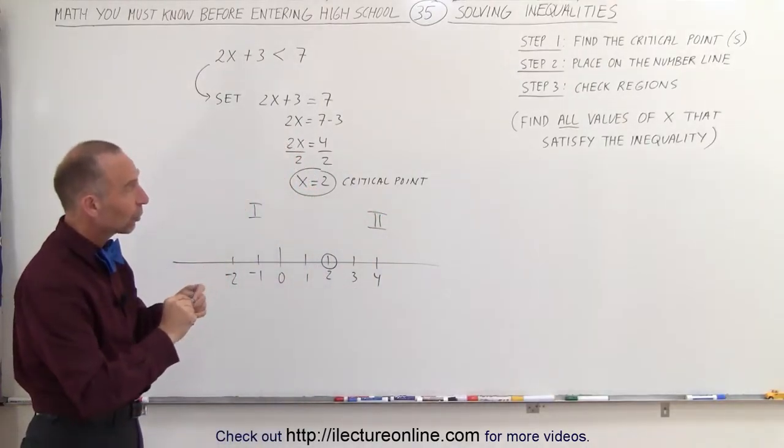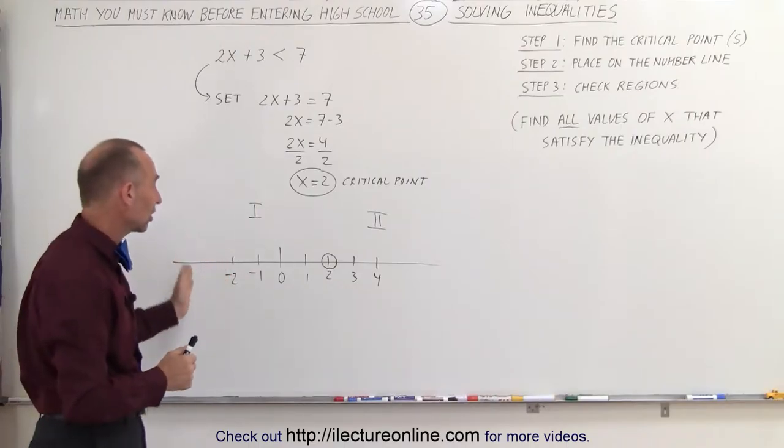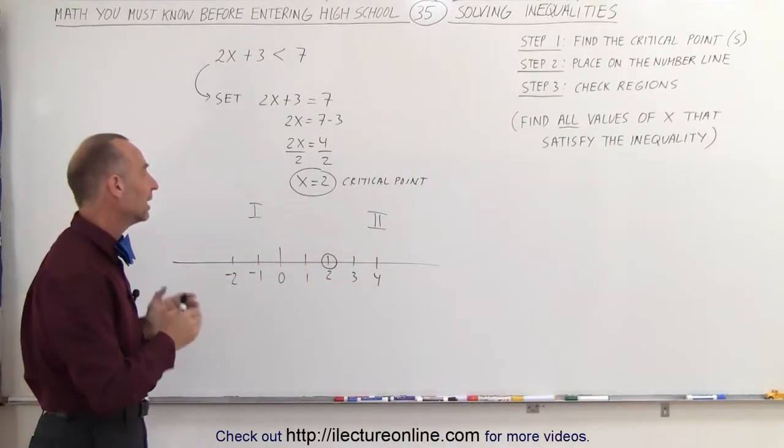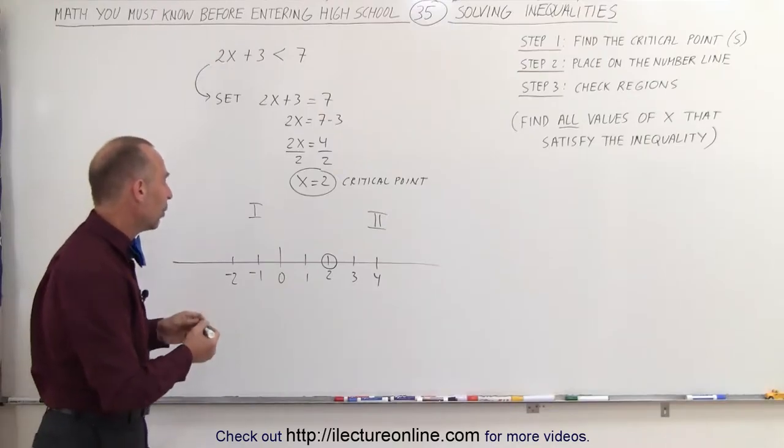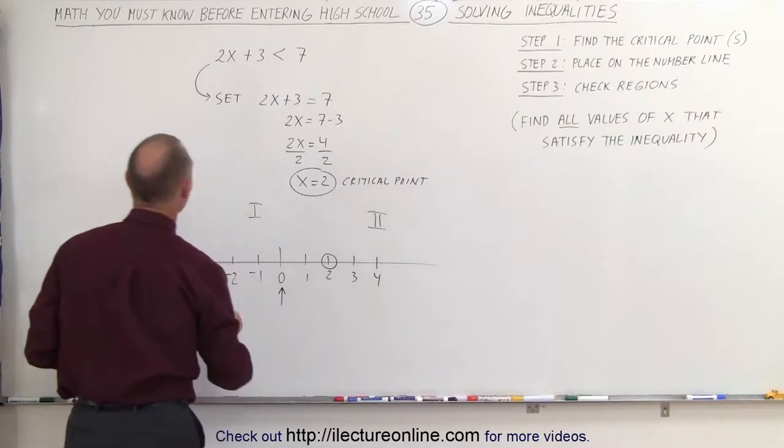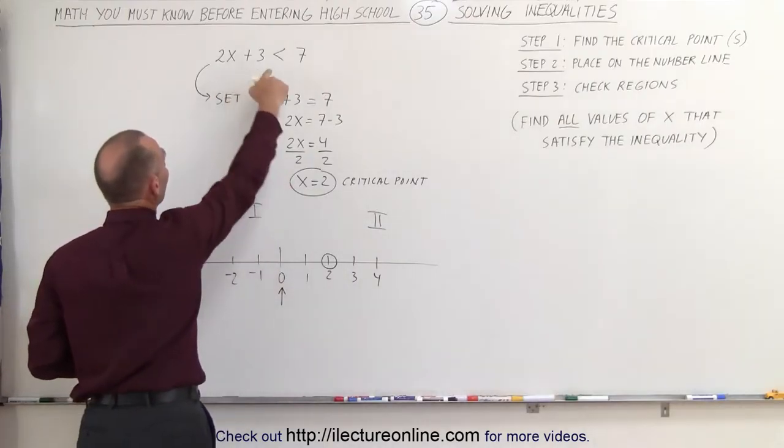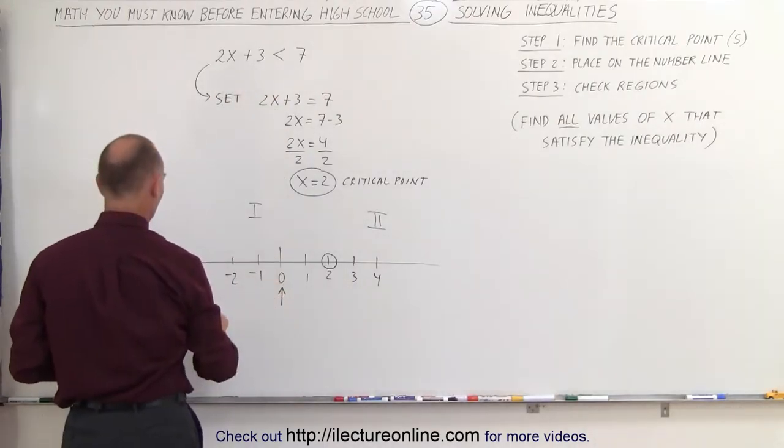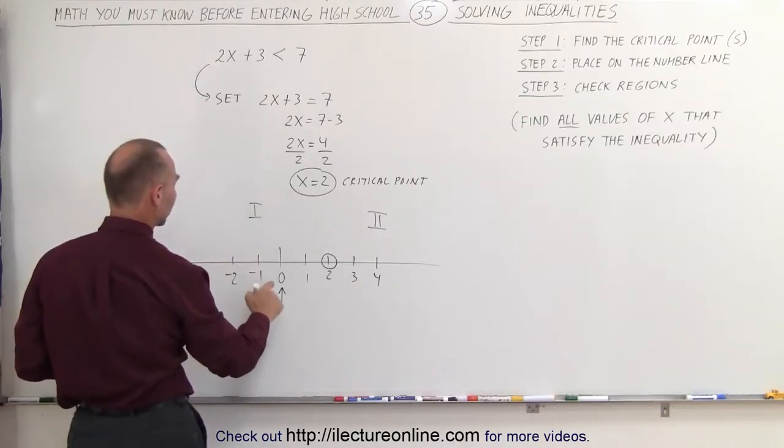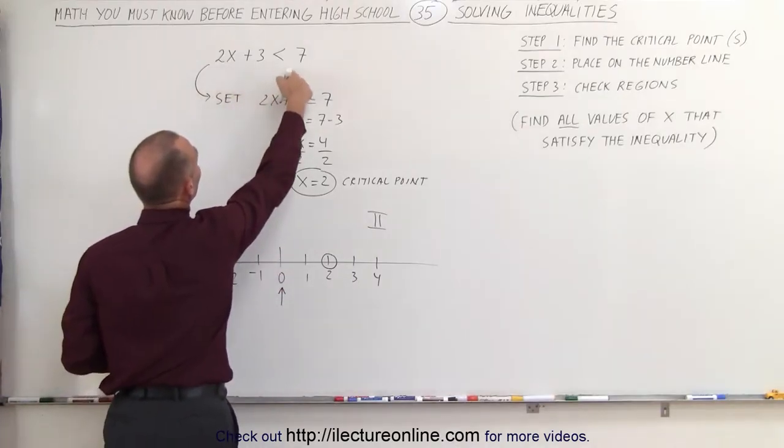Now the next step is we're going to check the regions. We're going to check each of the regions to see if the region satisfies the inequality. So let's pick a point. We're going to pick the point number 0. So we do a test point and we're going to test that inequality using this test point. So test number 1. For region number 1, we're going to plug 0 in for x and see if it satisfies the inequality.